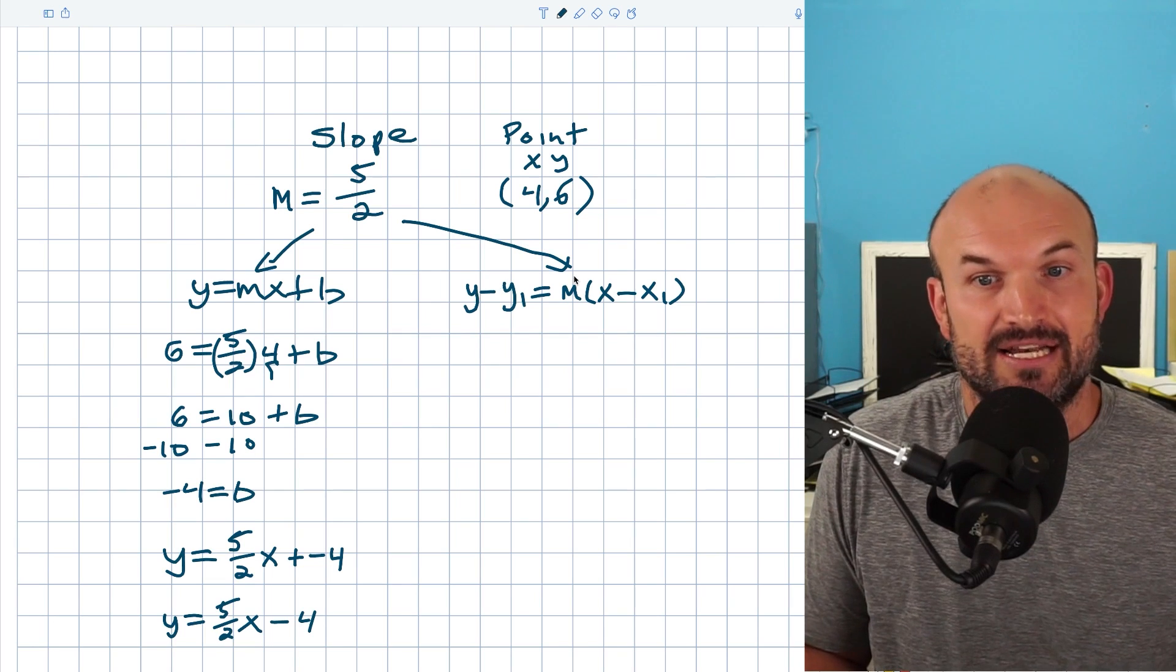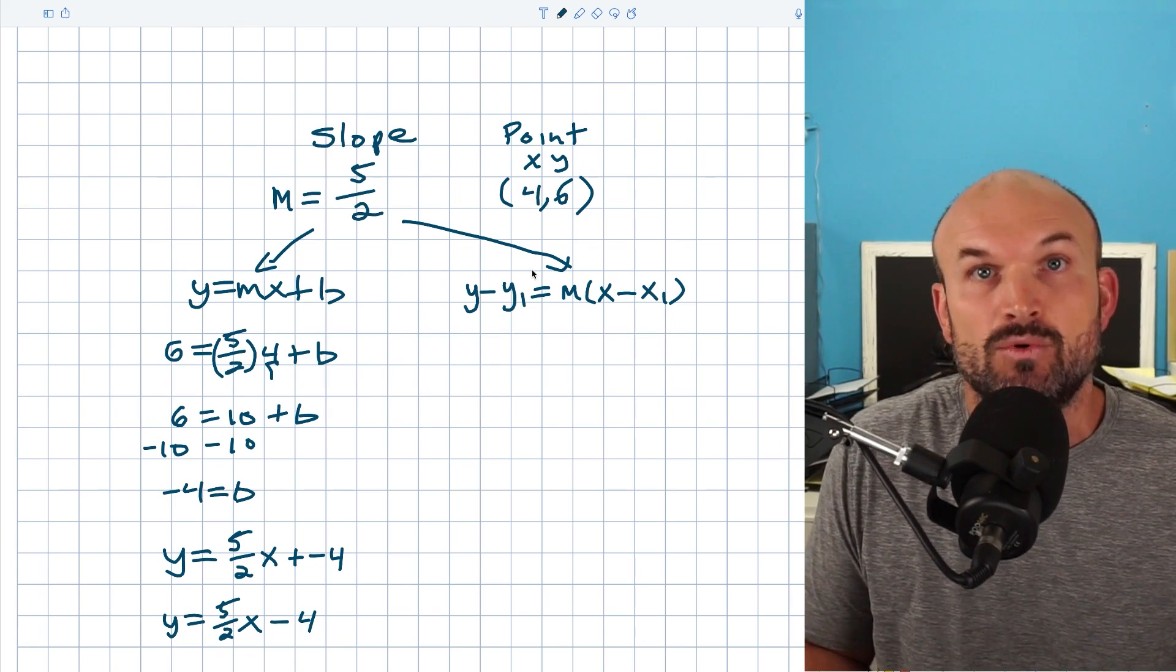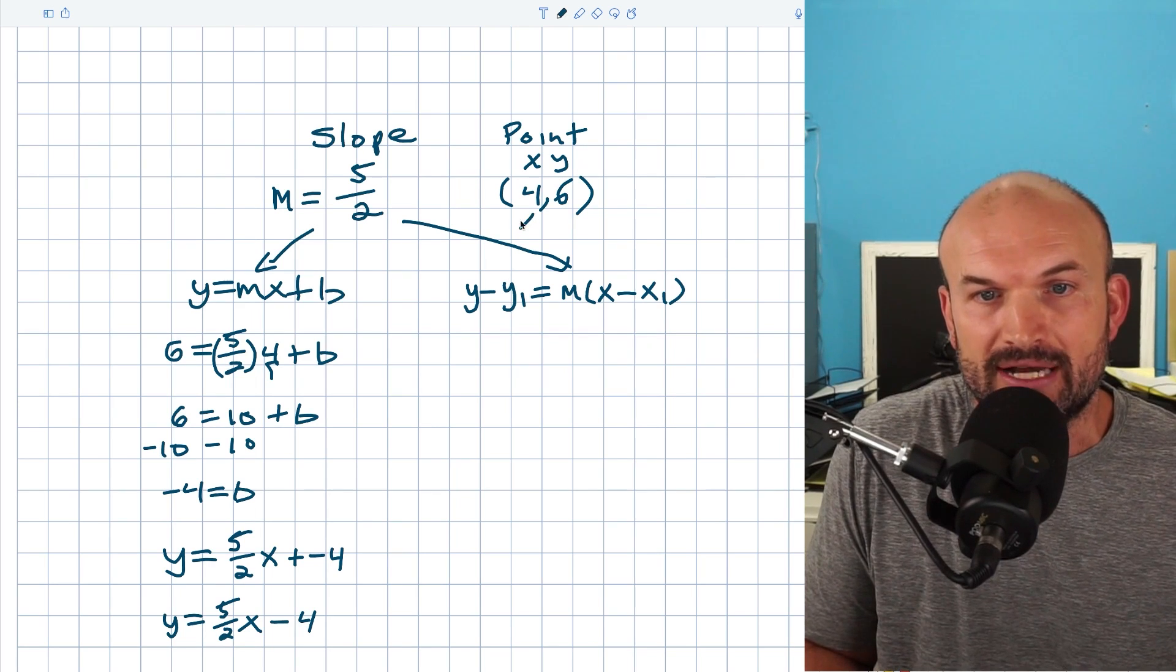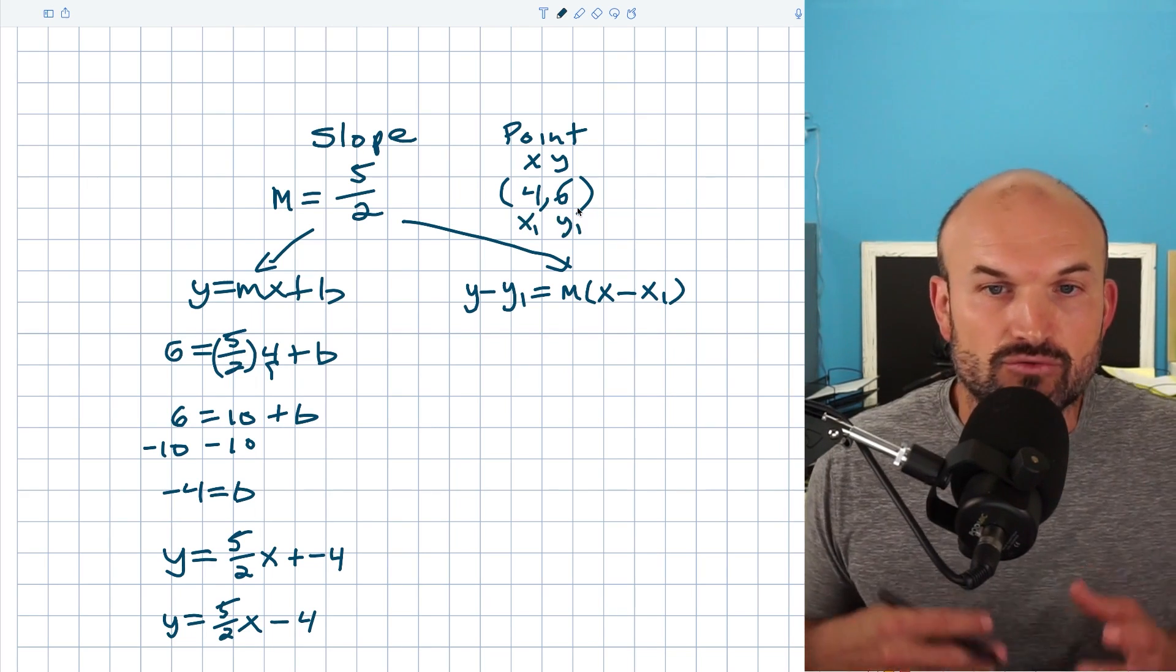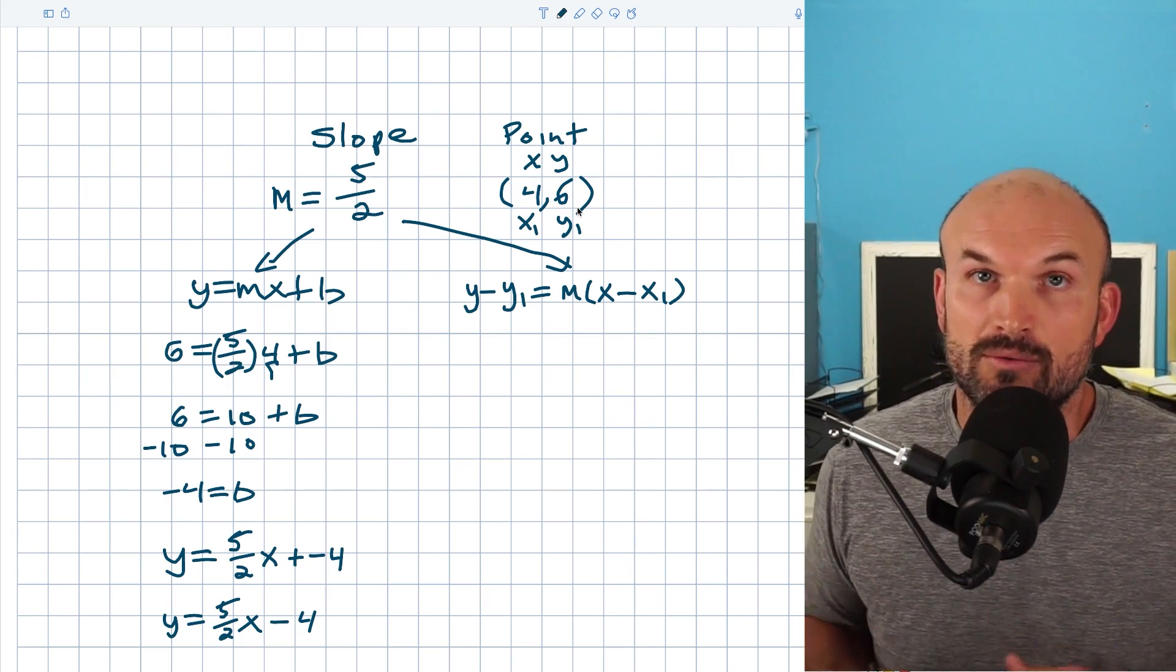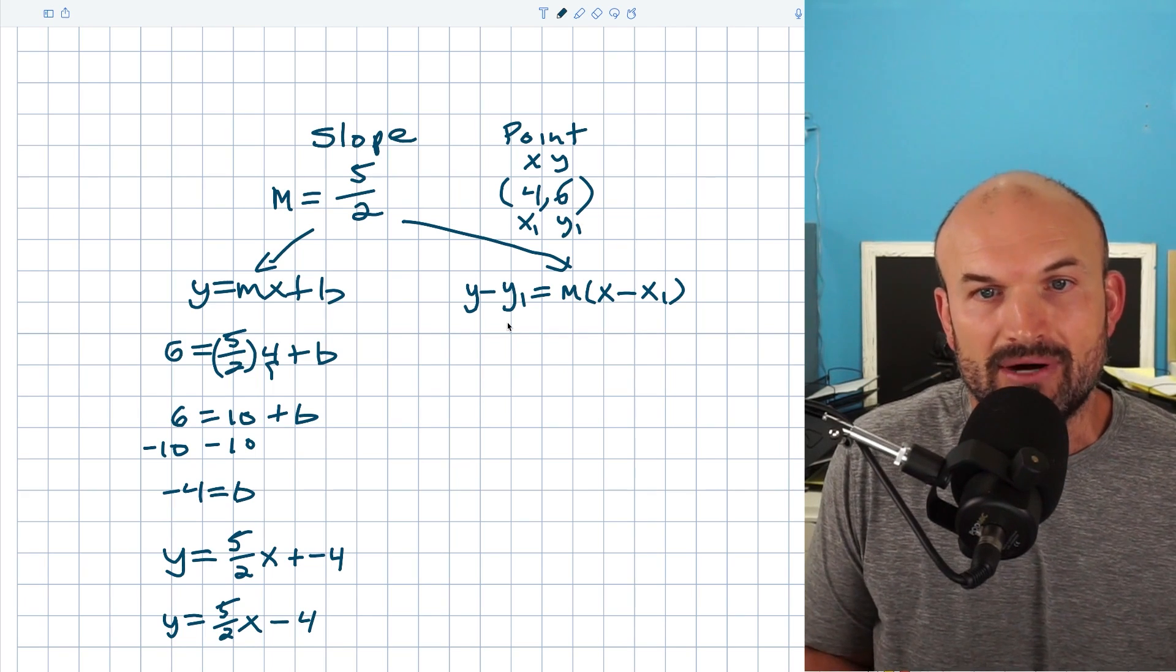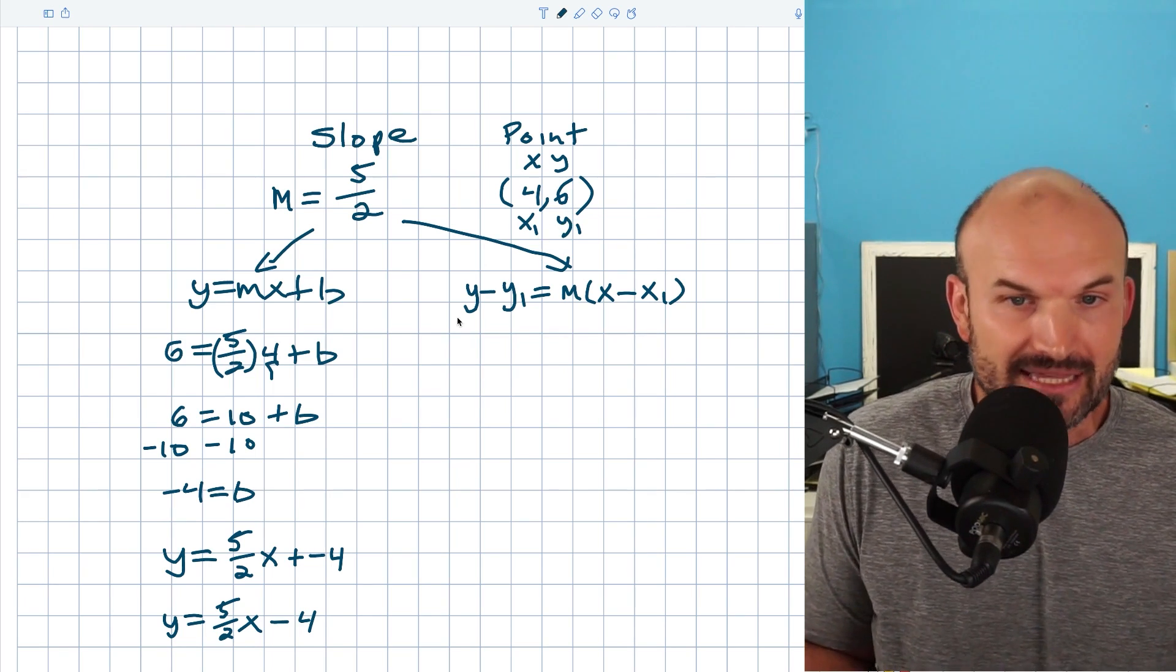We actually already have an x and a y. What we're going to plug our values of four and six in for are going to be x1 and y1. So whenever you're given a point, a lot of times we want to use a subscript to represent those points. And this is also very helpful when we're using the point-slope form when we're given two points. So now I can represent four as x1 and six as y1. And now let's just go ahead and plug them into the format.